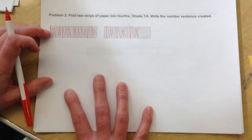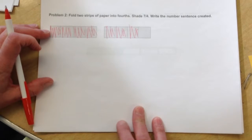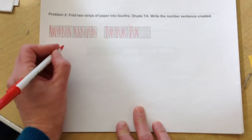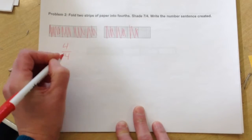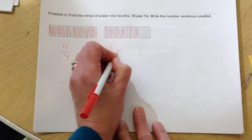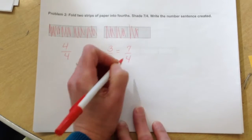Now we're going to write a number sentence. So we have four-fourths plus three-fourths gave us seven-fourths.